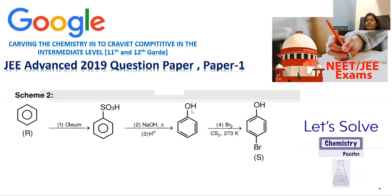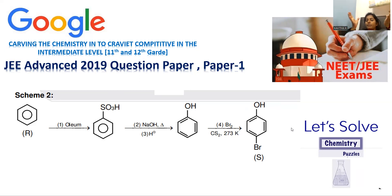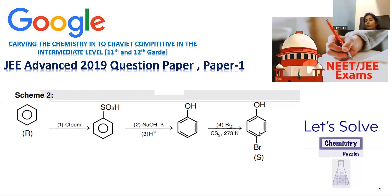OH is an ortho-para directing group, but we are maintaining extremely low temperature — 0°C conditions — so only mono-bromo product can be achieved through controlled bromination. Why do we get the mono-bromo at the para position rather than ortho? Because oxygen has two lone pairs of electrons and bromine also has three lone pairs and is bulkier in nature. Both factors — bulkiness and lone pair electrons — favor para placement since all bulky groups prefer to be far apart. Para is more preferable over ortho. Under extremely lower temperature, para-bromophenol is the preferred product.